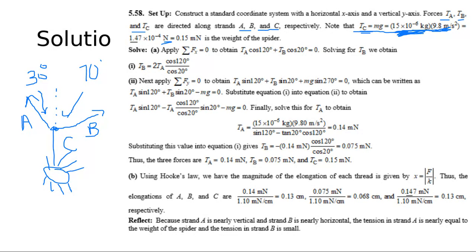We found what strand C is: 1.47×10⁻⁴ Newtons straight down. Now we figure out what happens with strands A and B using the equilibrium equations.